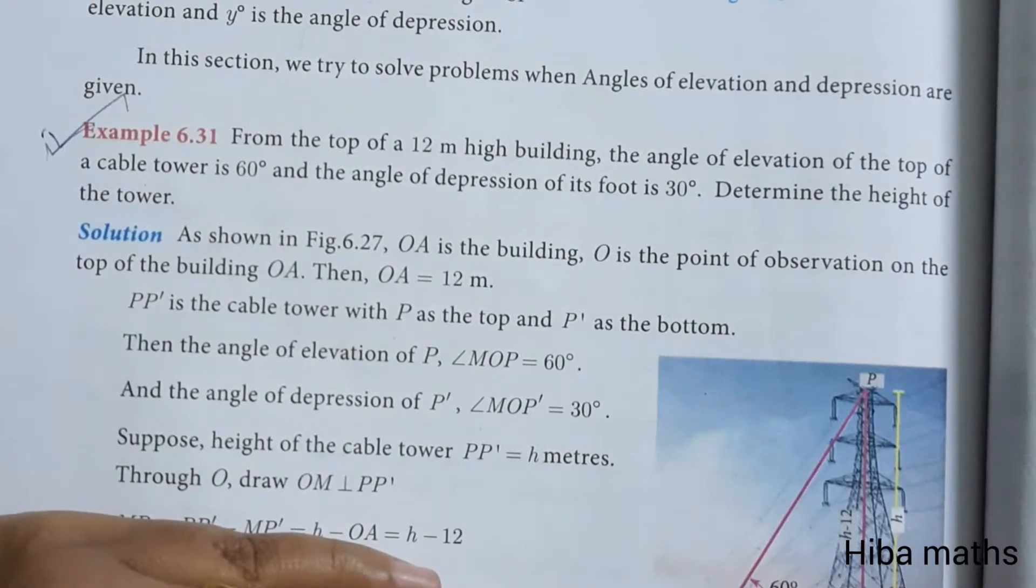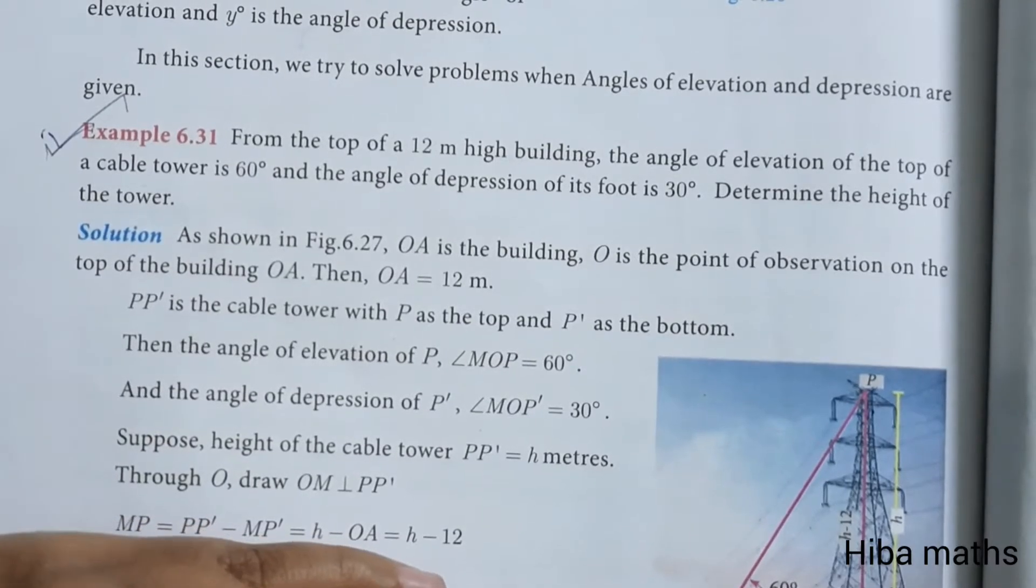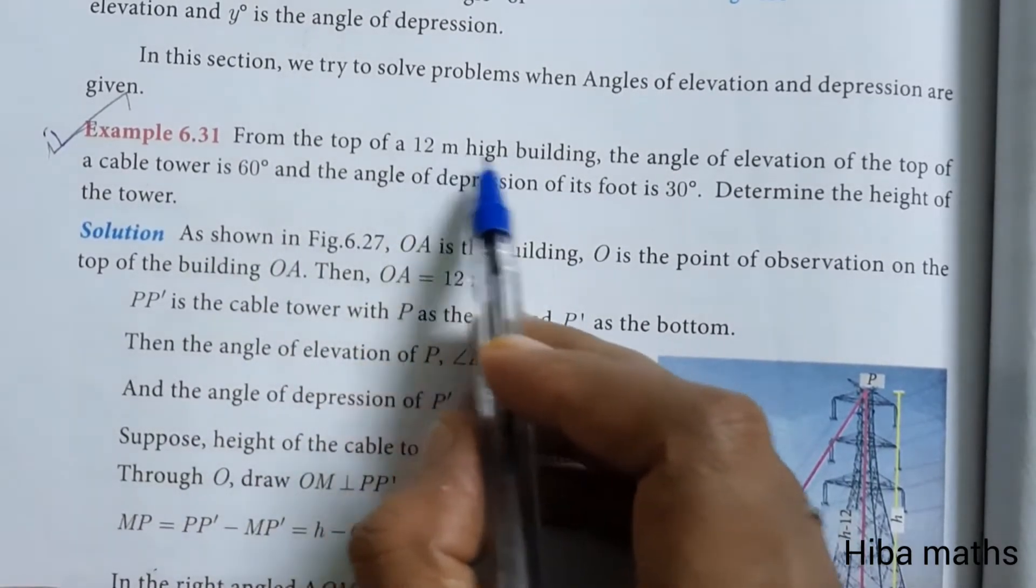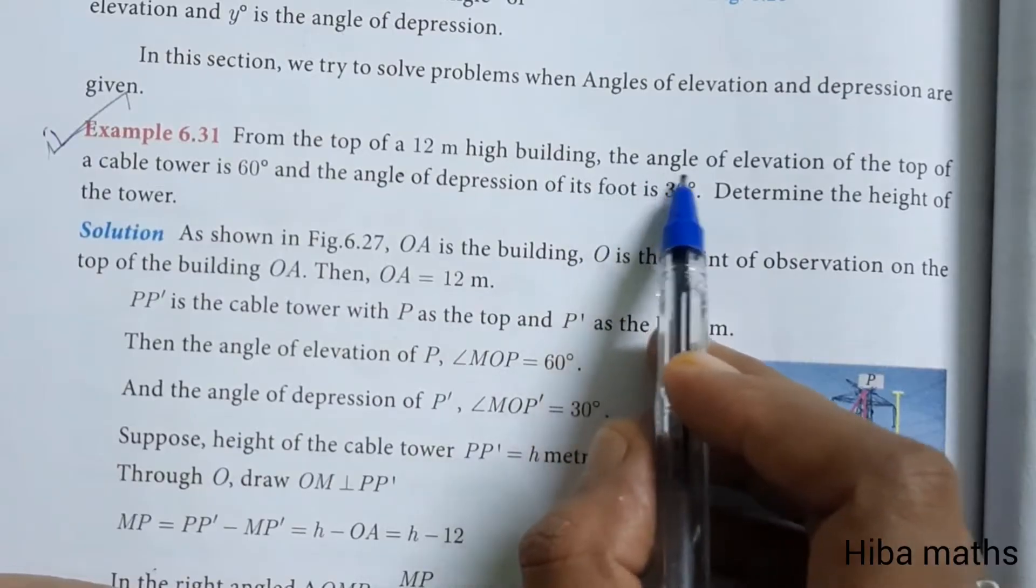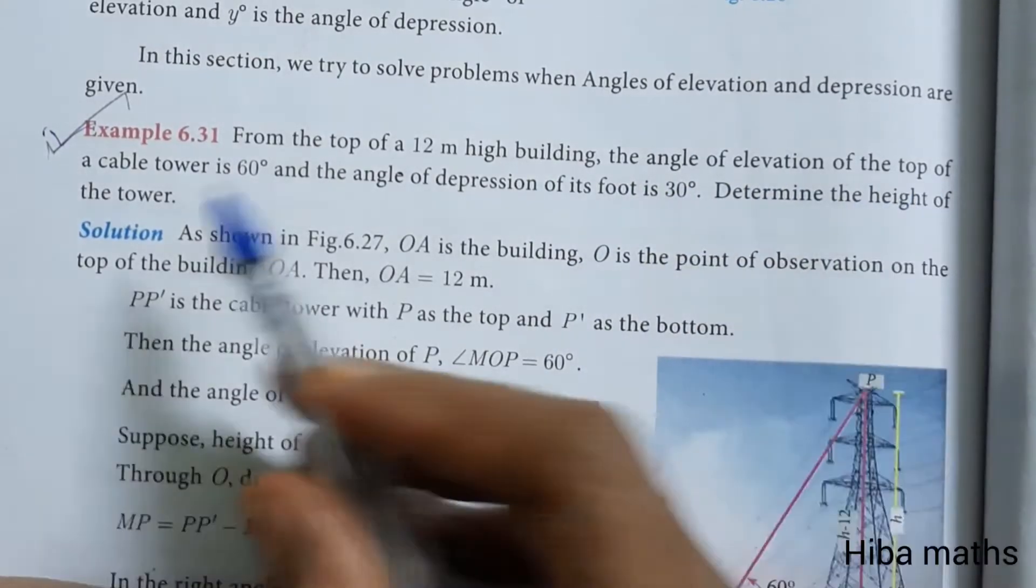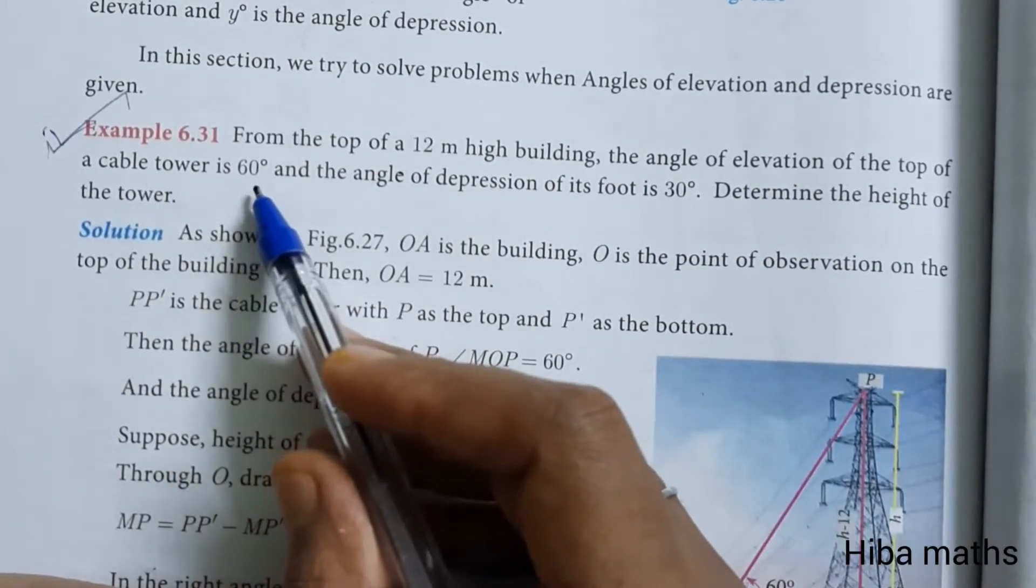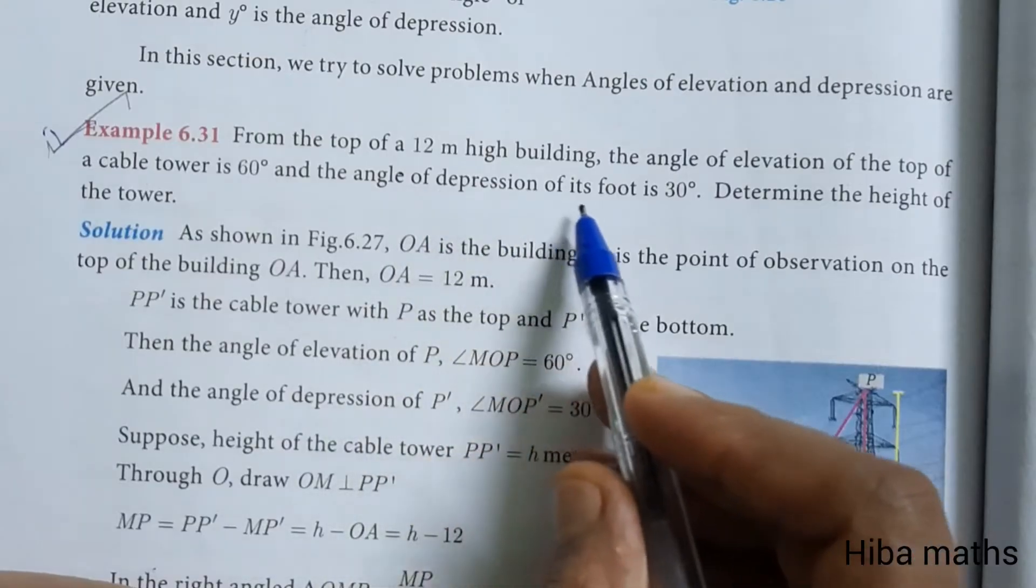Hello students, welcome to Hiba Maths. 10th standard math, chapter 6, example 6.31. From the top of a 12 meter high building, the angle of elevation of the top of a cable tower is 60 degrees and the angle of depression of its foot is 30 degrees.